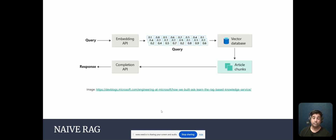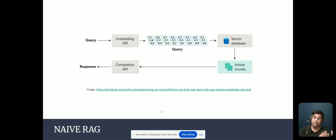A naive RAG solution looks like this: you have the query, that query is then embedded, and you compare it to the documents available in the vector database. You then retrieve the relevant documents and pass them along with the query to the language model, which now has that as context and is able to generate a response.